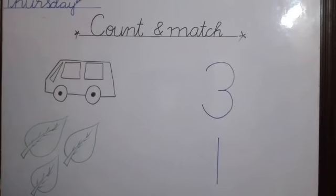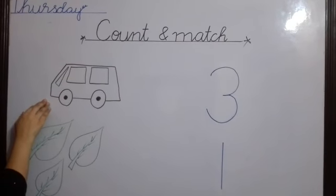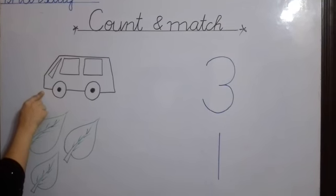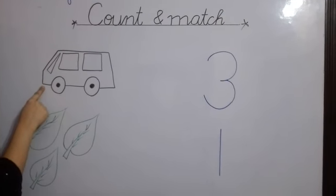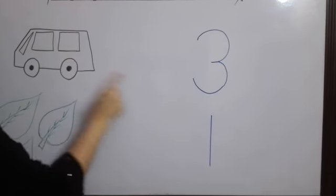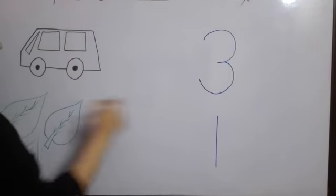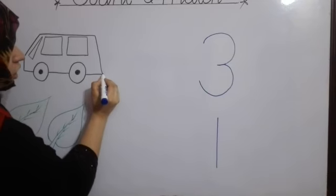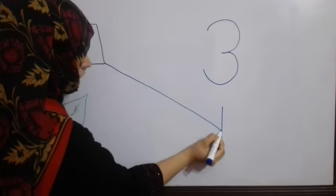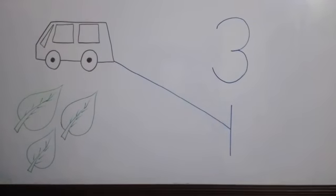The teacher has told you that you have to count the pictures and match it with the same digits. The first picture is car. One car, match it with one. Now match it with one and count the next picture.